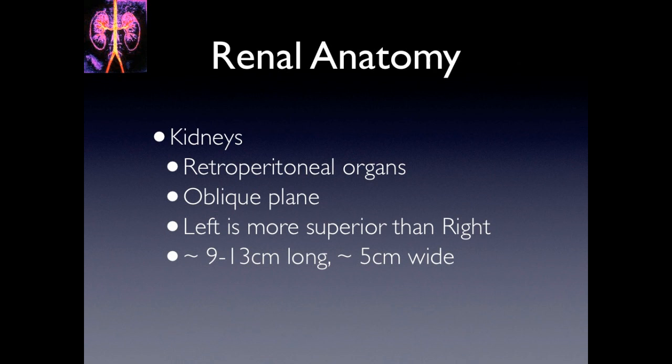The kidneys are retroperitoneal organs, and they lie in an oblique plane compared to the other planes. The left is more superior than the right, and their sizes range anywhere from 9 to 13 centimeters long by 5 centimeters wide.